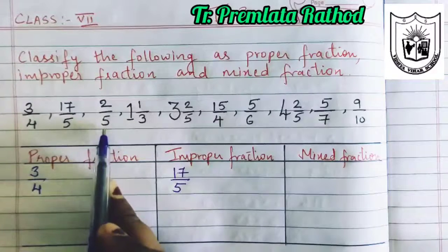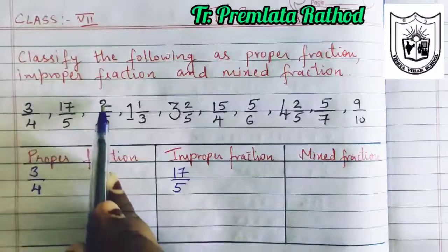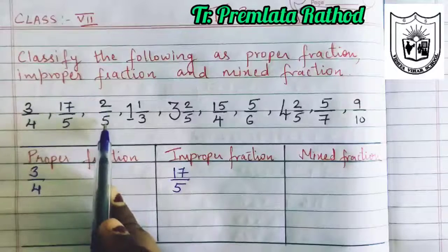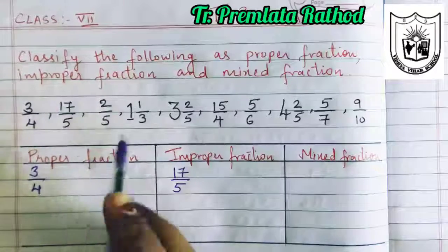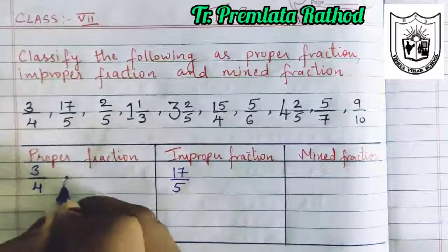Next, look at this number. We have 2 by 5. Numerator is small compared to your denominator, so this will go under which fraction? It will come under proper fraction.